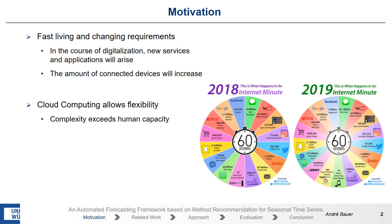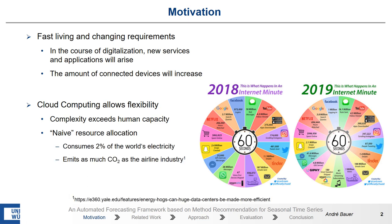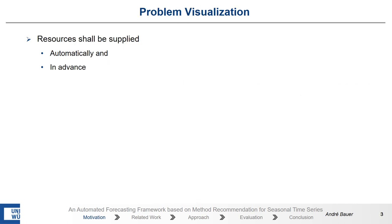However, cloud computing — or the resource allocation in cloud computing — is quite complex, and therefore we need an intelligent mechanism to handle it. Indeed, one could say we could use a naive resource allocation, but all data centers together consume 2% of the world's electricity demands and emit as much CO2 as the airline industry. For the sake of our planet, the naive resource allocation is not an option.